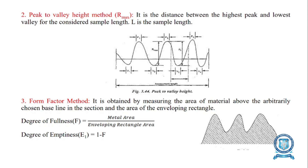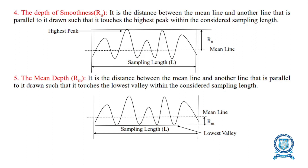The peak-to-valley height method is the distance between the highest peak and the lowest valley within the considered sample length L. The form factor method is obtained by measuring the area of material above an arbitrarily chosen baseline in cross-section and the area of the enveloping rectangle. The formula is: Degree of fullness F = metal area / enveloping rectangle area. Degree of emptiness E1 = 1 − F.